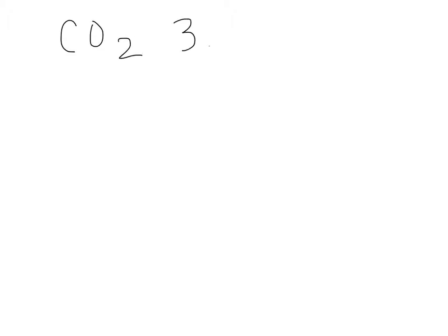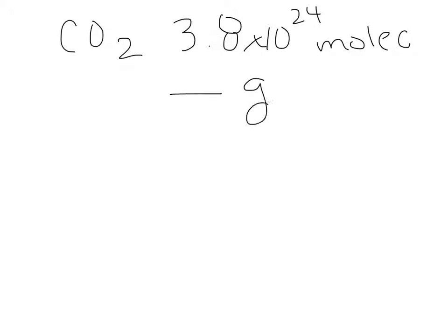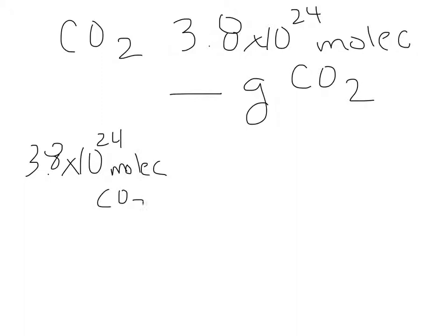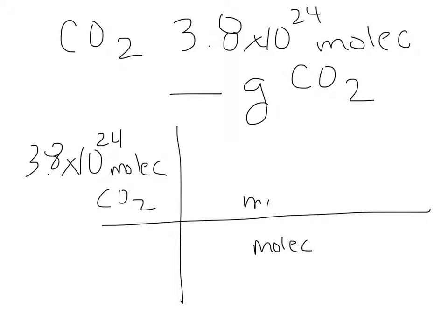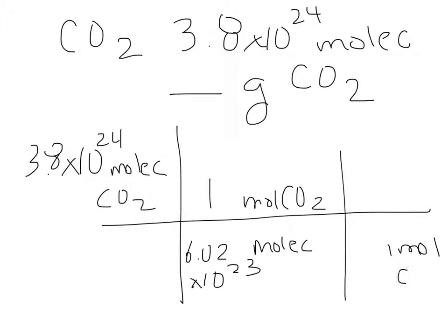Using my example of carbon dioxide, let's say that I start with 3.8 times 10 to the 24th molecules and I want to know how many grams of carbon dioxide I have. So I start with what I'm given: 3.8 times 10 to the 24th molecules of CO₂. I multiply that — then I have to go from molecules to moles of CO₂. For every one mole, I use Avogadro's number of 6.02 times 10 to the 23rd. And then to go from moles of CO₂ to grams of CO₂, I use my molar mass, which I calculated earlier to be 44.01 grams of CO₂.